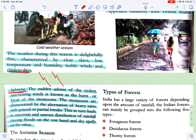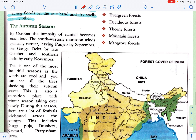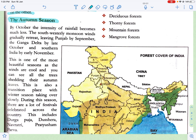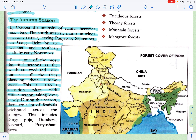We have covered three seasons: the cold weather season, the hot weather season, and the southwest monsoon season. The last season is the autumn season. By October, the intensity of rainfall becomes less. The south-westerly monsoon winds gradually retreat, leaving Punjab by September, the Ganga Delta by late October, and southern India by early November. This is one of the most beautiful seasons as the winds are cool and you can see all the trees shedding their autumn leaves. It is also a transition phase with winter season taking over slowly. During this season, many festivals are celebrated such as Durga Puja, Dussehra, Navratri, and Diwali.